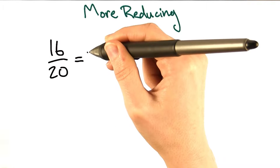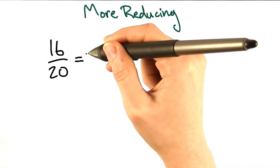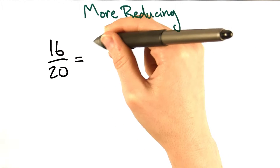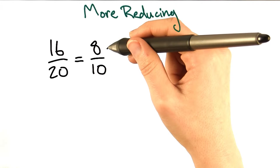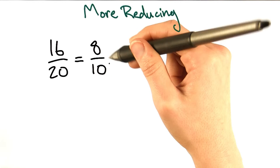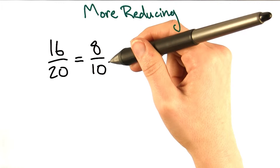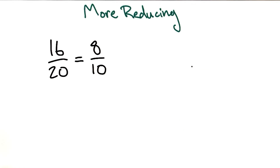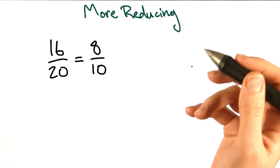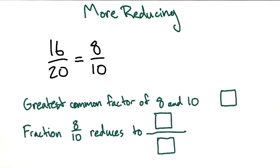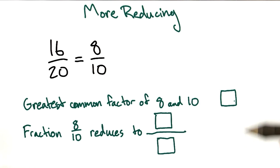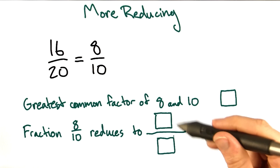All right, so we know that 16 over 20 reduces to 8 tenths. 8 tenths can be reduced even more though. I notice that 8 and 10 have another common factor. So what is the greatest common factor? And what is the fraction that 8 tenths reduces to? Write the greatest common factor here and the reduced fraction here.